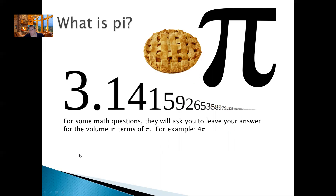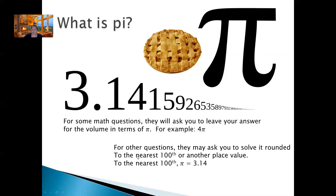Pi is 3.14159265358979... and so on. Normally for a math problem you're going to round it to 3.14, and that's what we're going to do today. Some questions are going to ask you to leave the volume in terms of pi — that means you're not going to multiply by 3.14; pi is just going to be in your answer, like for example 4 pi. And some questions are going to want you to solve it and round to the nearest hundredth or whatever, so in that situation you would take 4 times 3.14 to get your answer.